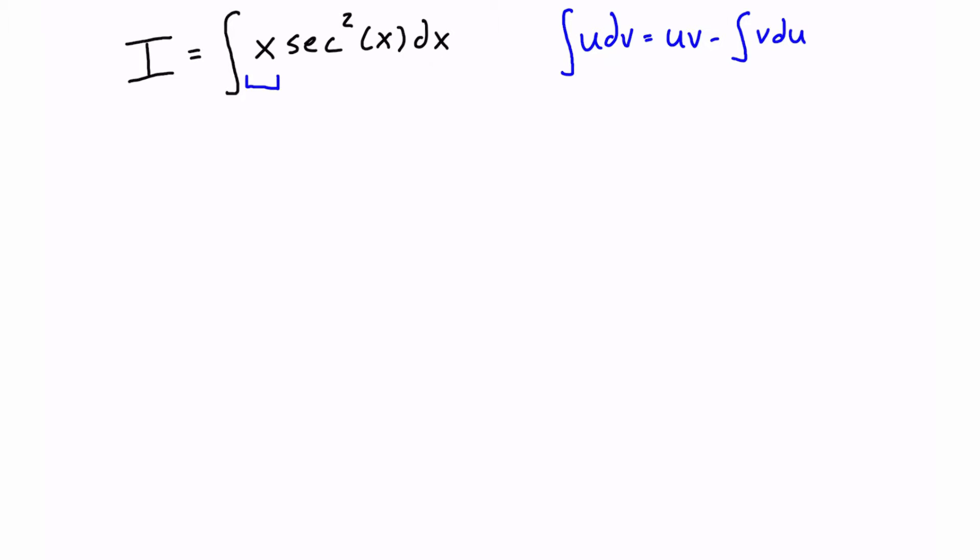So getting started, we have u here, we're going to call x u, we're going to call secant squared of x dx, we're going to call this dv, which means that we have the integral now of u dv.